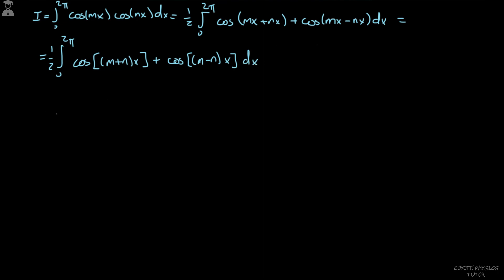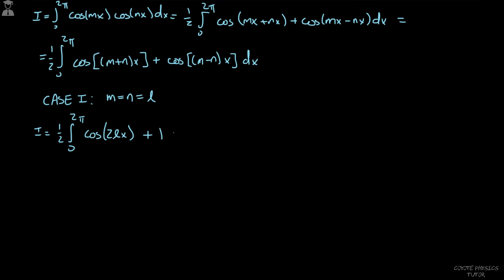Before evaluating, we break this into cases. Case 1: m equals n; let's call them both l. Then m+n = 2l and m−n = 0, so cosine(0) = 1. The integral becomes one-half times the integral from 0 to 2π of [cosine(2lx) + 1] dx. Evaluating: one-half times [sine(2lx)/(2l) + x] from 0 to 2π. Plugging in the limits gives one-half times [−sine(4πl)/(2l) + 2π].